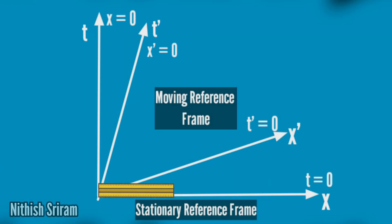Suppose you have a 1-meter stick in the stationary reference frame. In that stationary frame, the 1-meter stick will represent 2 points. This 1 meter is 1 meter. Now in the moving reference frame, we can transform the reference frame. In the moving reference frame, we can represent the point OQ and the point OP.